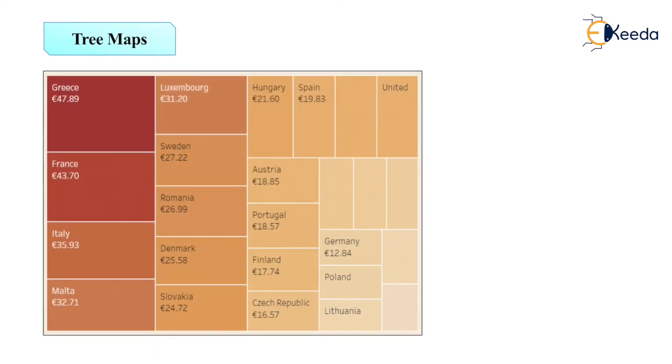Next is tree maps. This is a tree map. In that we can say Greece, then Luxembourg, Hungary, Spain and United. Through this we can form different tree maps. This is higher intensity map, this is lower intensity map like that.